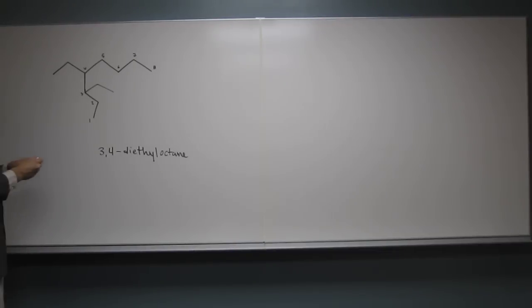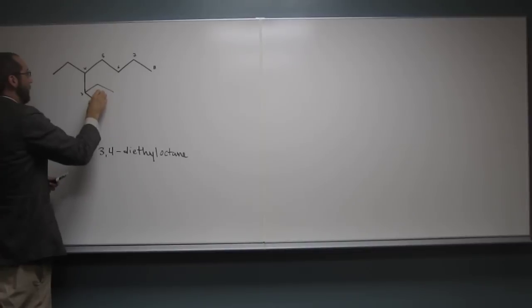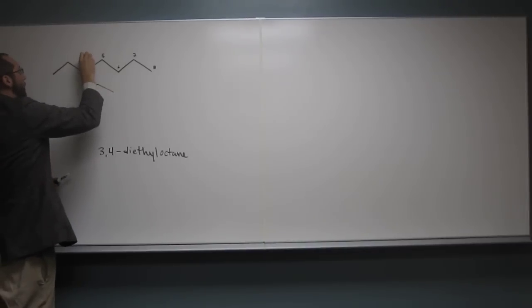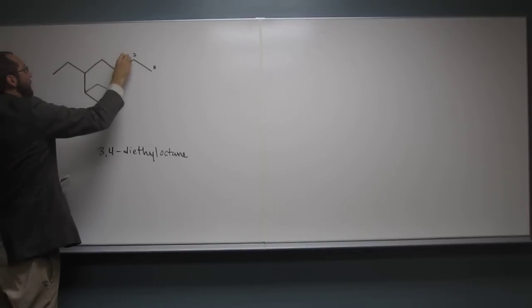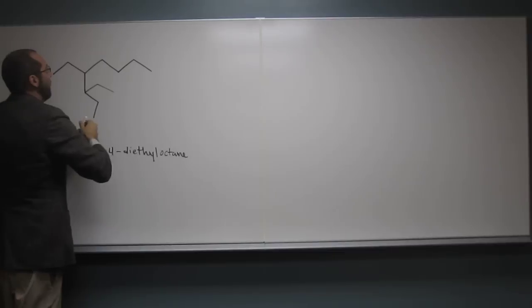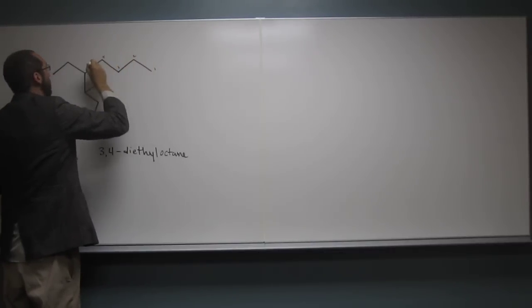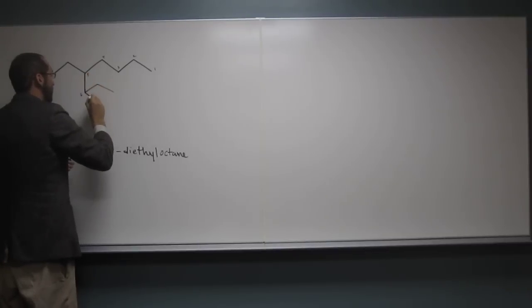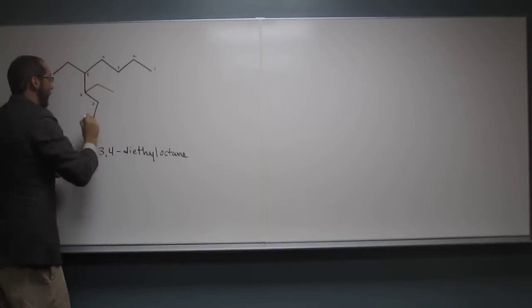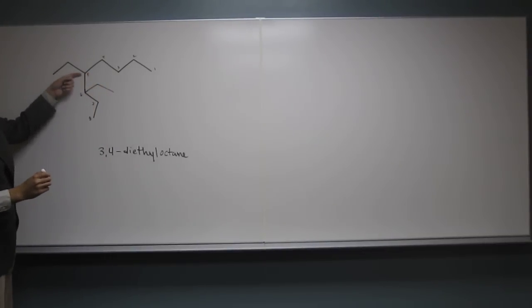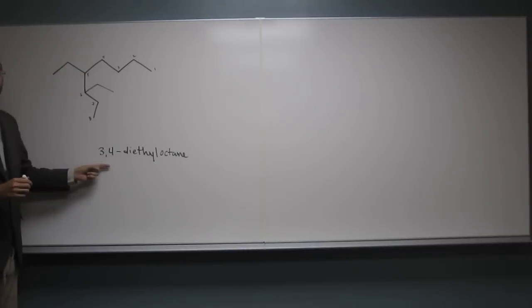Now remember, if you accidentally labeled this from the wrong way, right? Same. 1, 2, 3, 4, 5, 6, 7, 8. You see that the ethyl groups are coming off 5 and 6 now, right? Remember, we want the smallest numbers here. So 3 and 4 are smaller than 5 and 6.